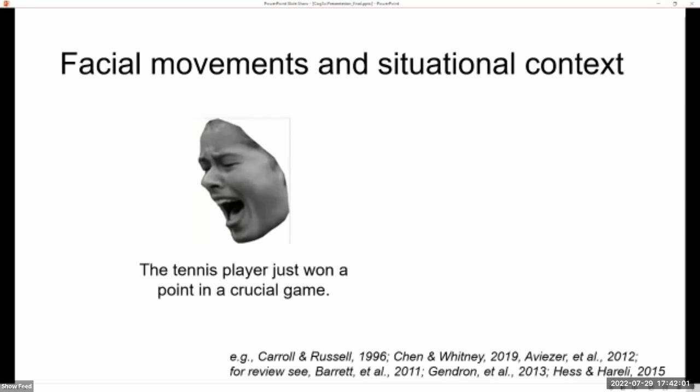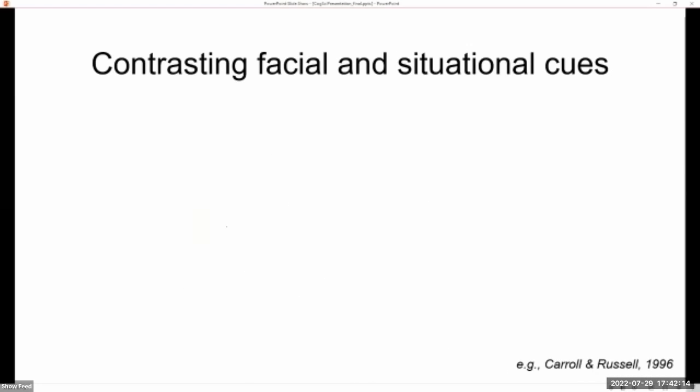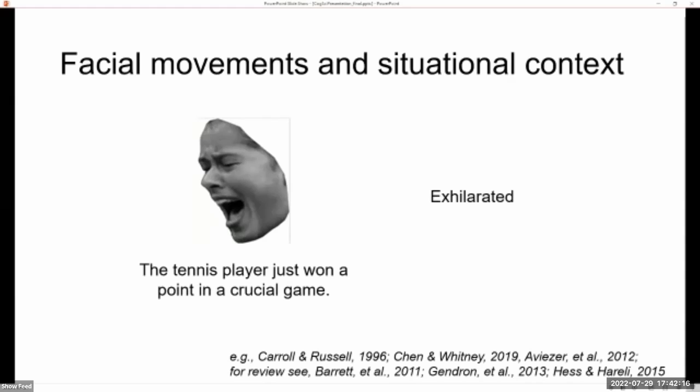But when presented with the corresponding situational information, such as this person just won a point in a crucial game, people are likely to infer that this person is feeling exhilarated. So inferences that are drawn from facial movements alone often change in the presence of descriptions of social situations.